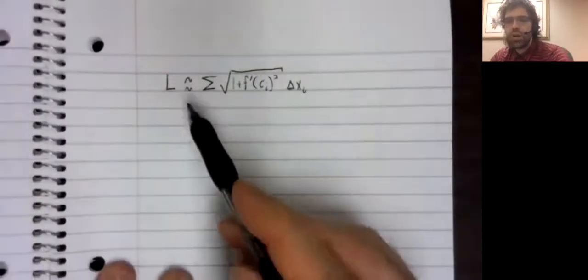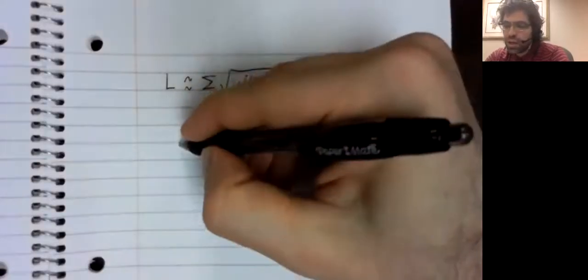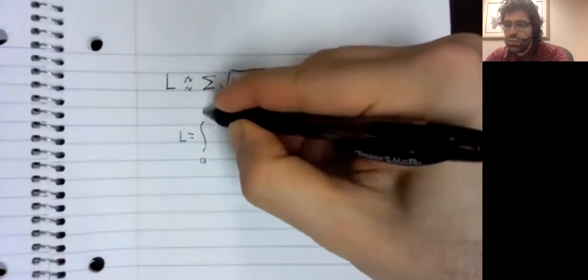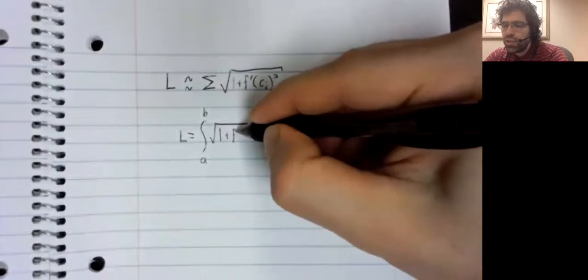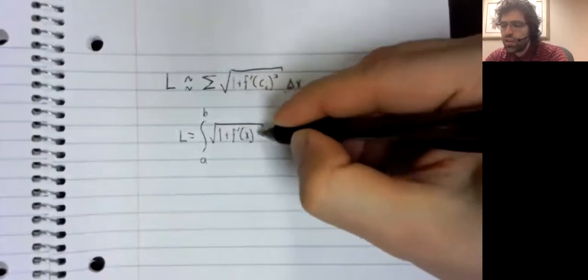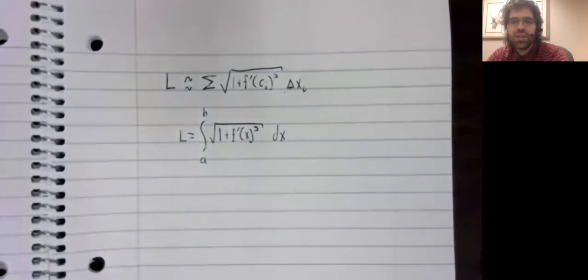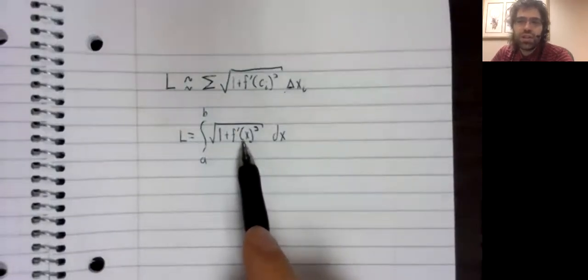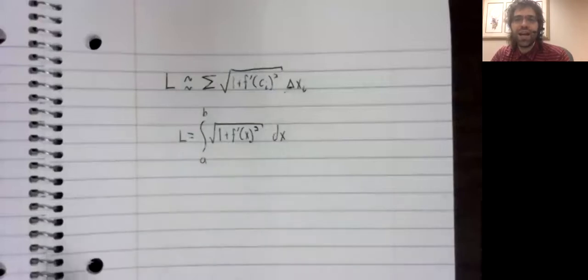So to make this approximation exact, we take the limit as these delta x sub i's go to zero. And we get that the arc length is integral from a to b of the square root of one plus the derivative of the function squared dx. So in order to use this formula, we do need this function to be differentiable. That's not a requirement we had when we were looking at volumes, for example.